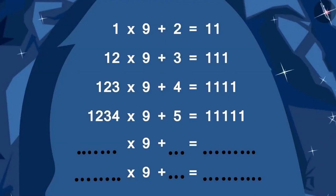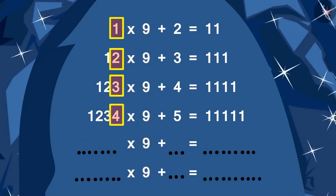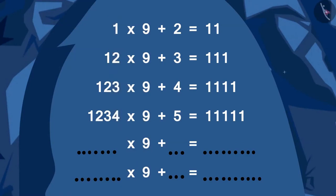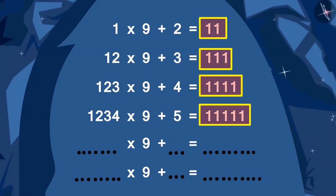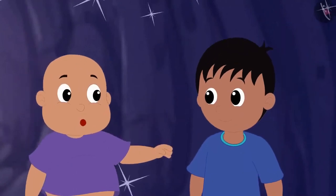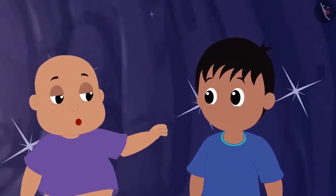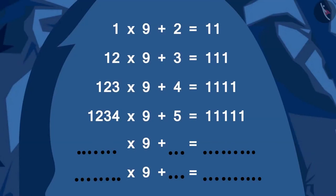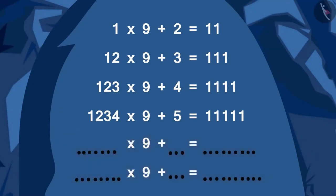Every time a new digit is added to the number that is multiplied by 9, and it is one more than its previous digit. And the number of ones in the answer is exactly equal to the number with which it is added. We seem to have found the rule of this number pattern. Let us fill these spaces according to this rule. Children, can you also fill in the blanks of this number pattern with Raju and Bablu? You can find a solution by pausing the video.